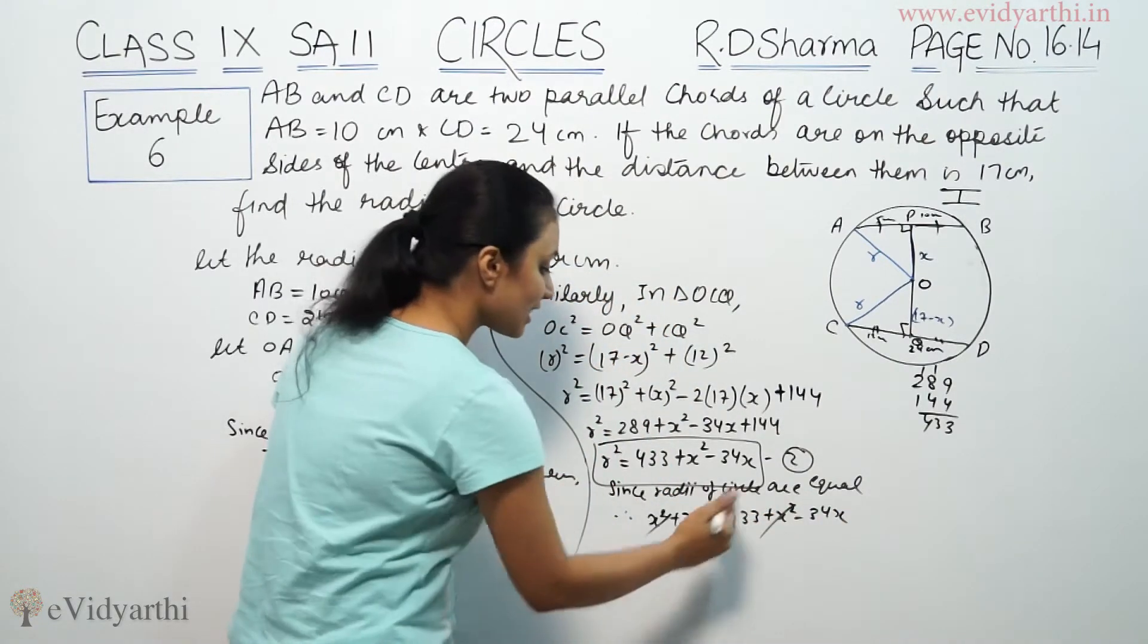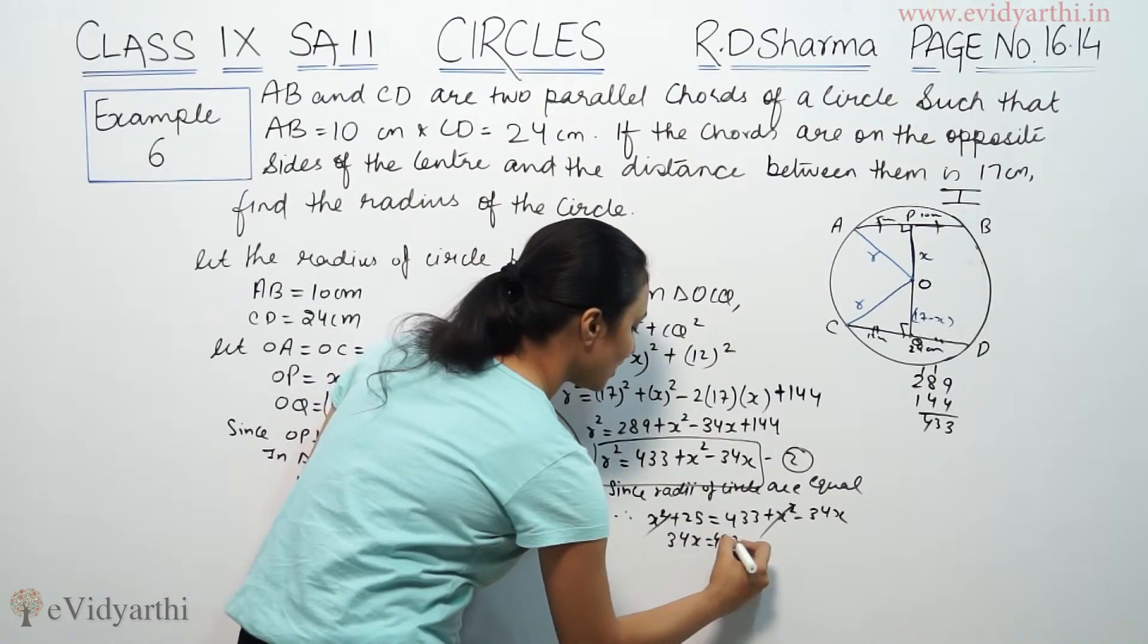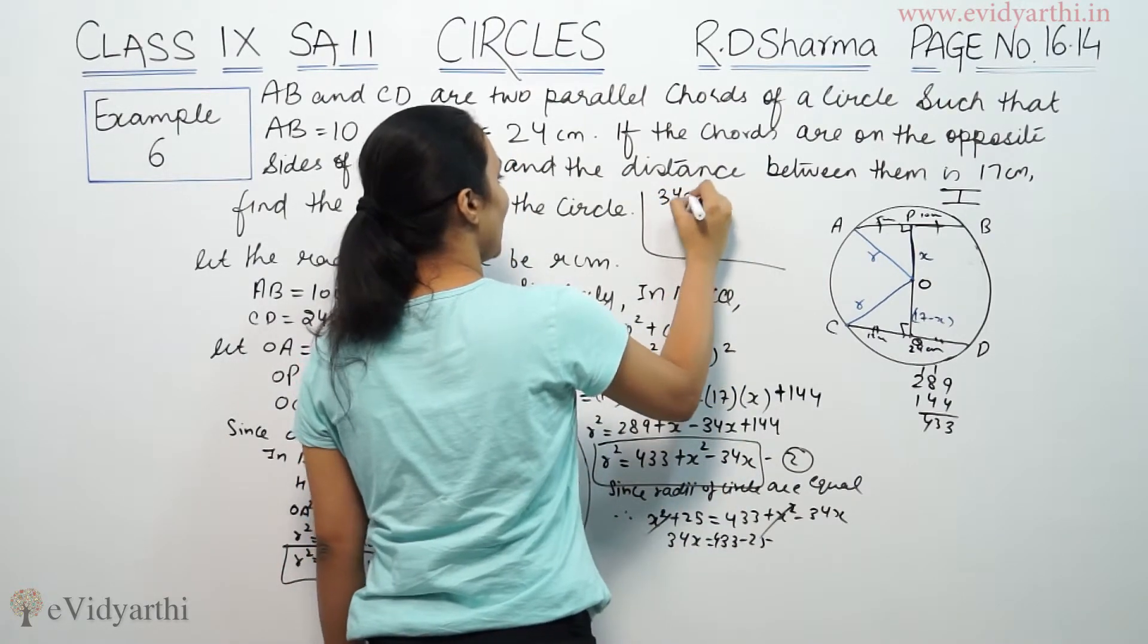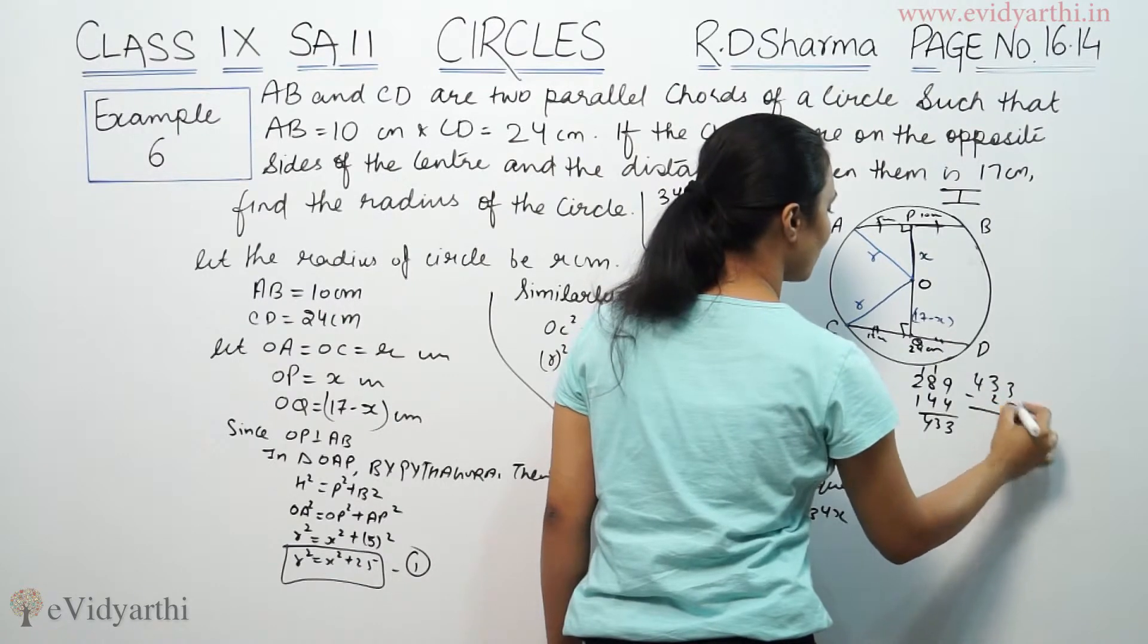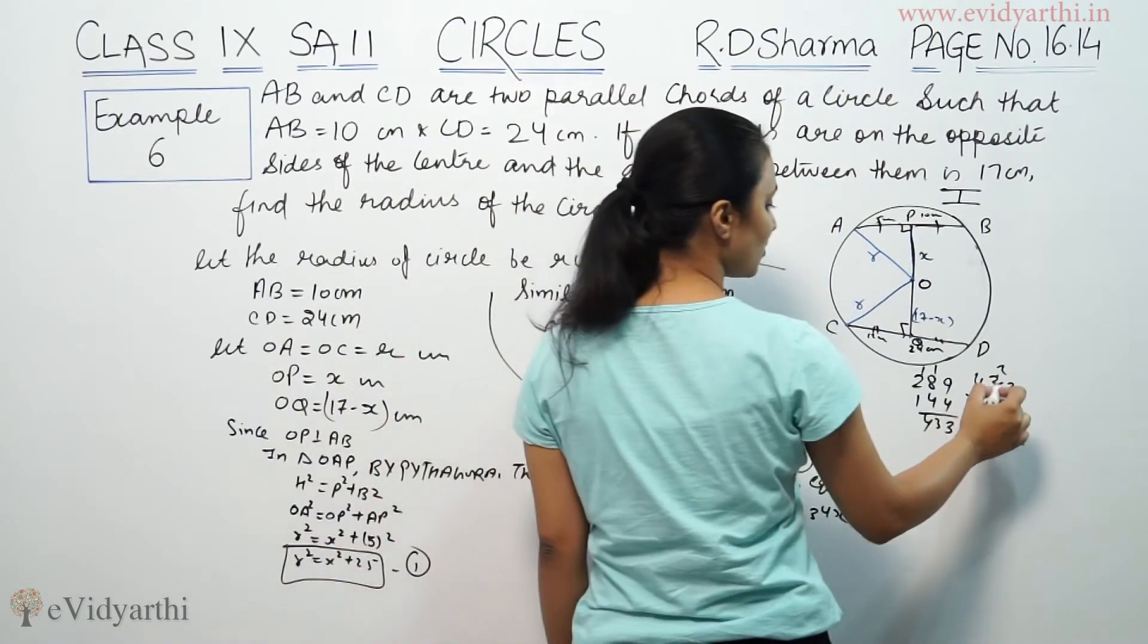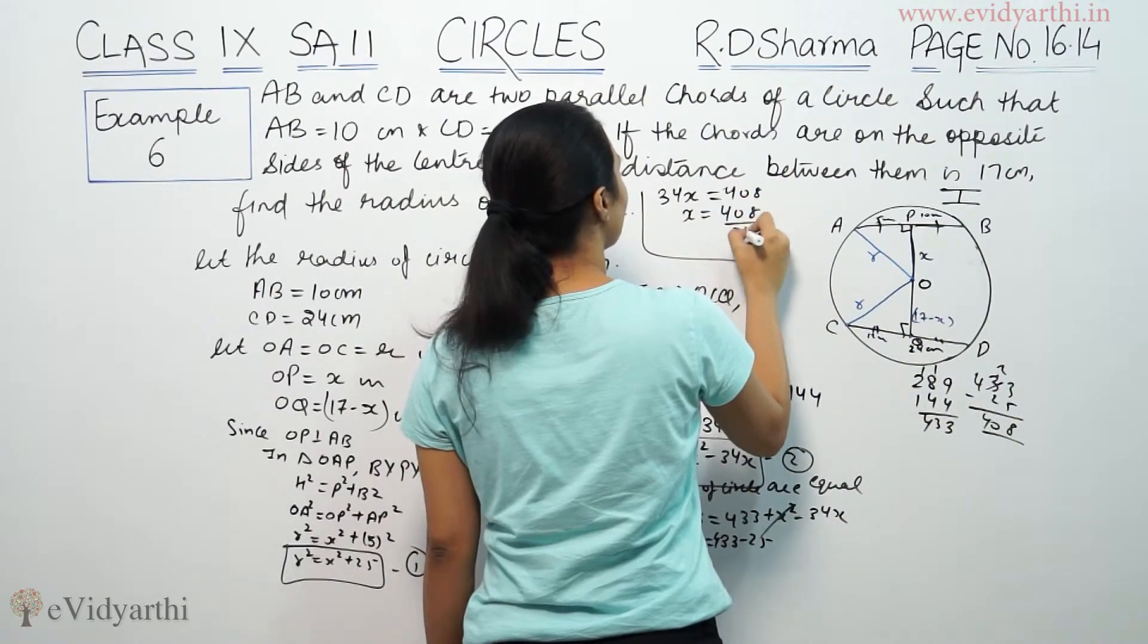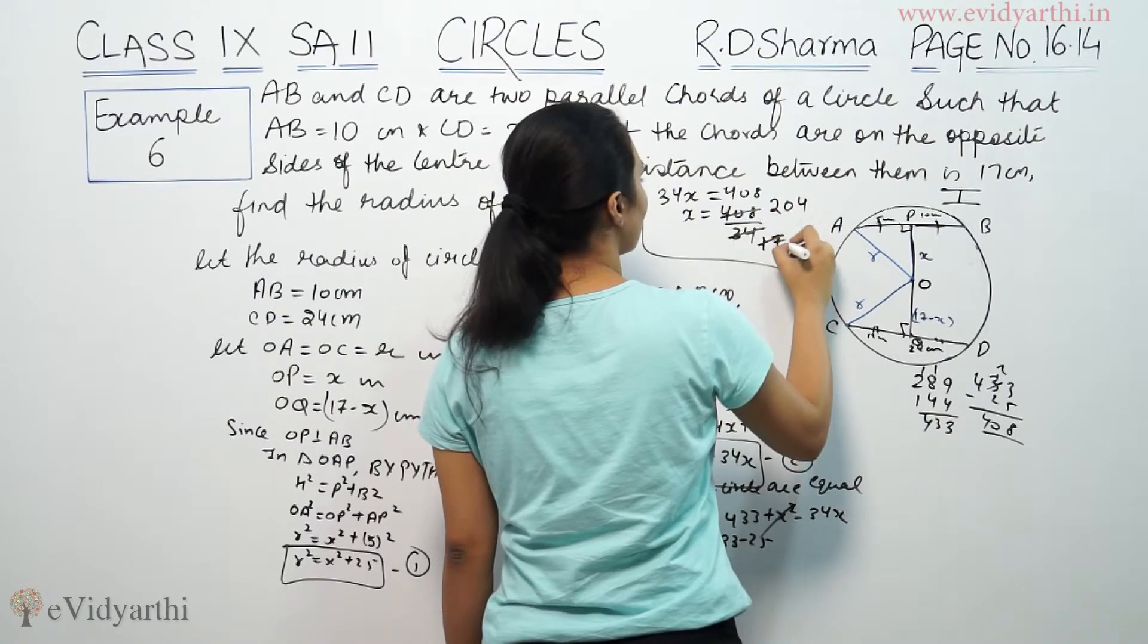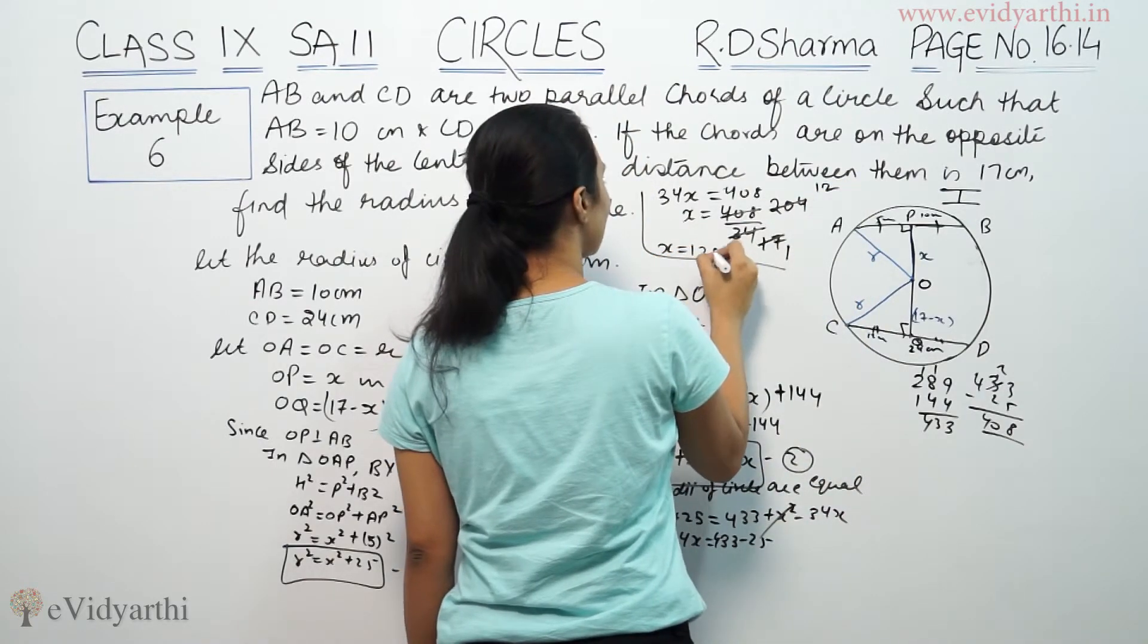So x square cancels. 34x equals 433 minus 25, which is 408. So x will be equal to 408 by 34, which gives us 12. So x is 12 cm.